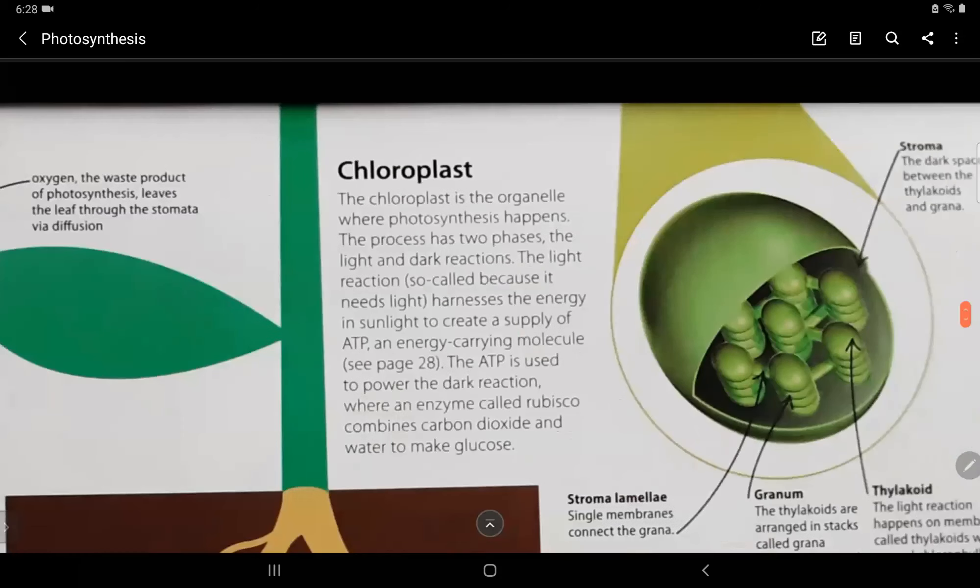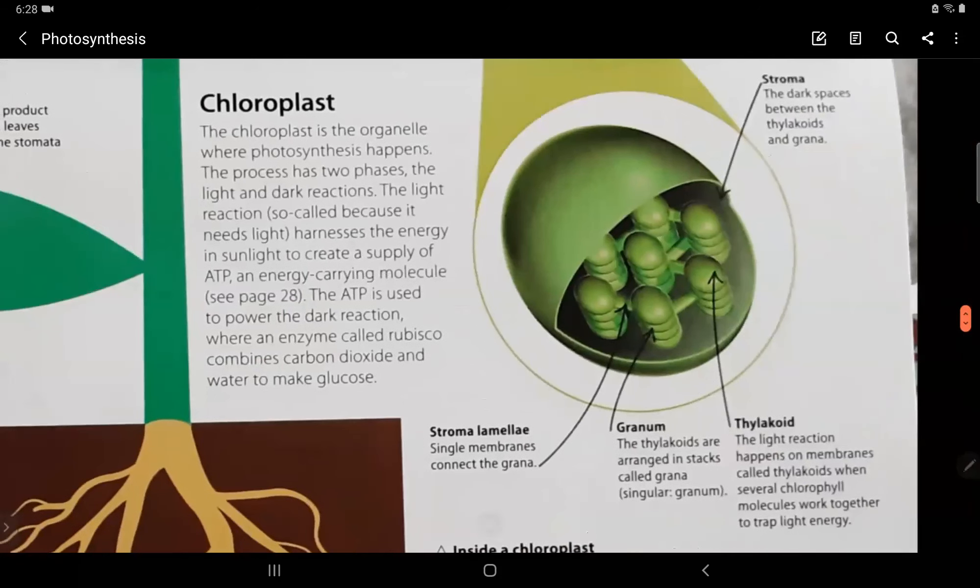Now, this is a chloroplast. This is the stomata. This is the stroma lamellae, stroma lamellae, granum, and thylakoid. So, let's read about each and every one. Stroma, the dark spaces between the thylakoids and grana. Stroma lamellae, single membranes connect the grana-granum.